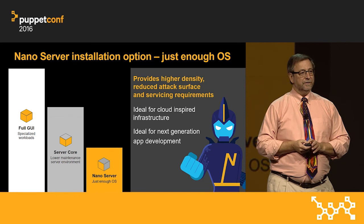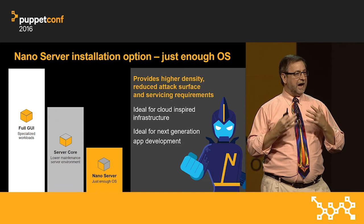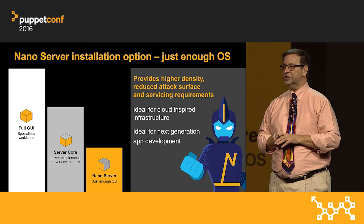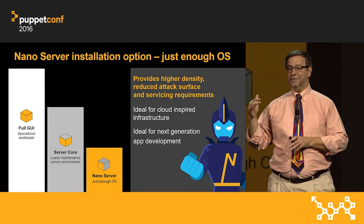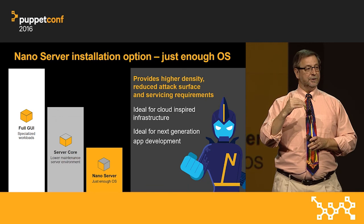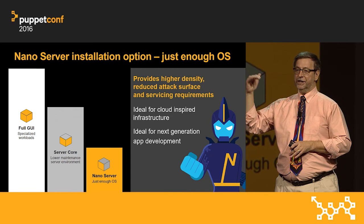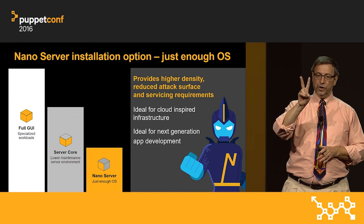Windows Server 2016 now has a new installation option. We have a full GUI, optimized for small business scenarios and remote desktop. We have Server Core, for running traditional server headless applications in your data center. And we now have Nano Server — a new headless deployment option optimized for two scenarios: cloud fabric (running on the host providing virtualization and storage) and next generation application host. In the future, all of Windows Server will be refactored as optional components on top of Nano Server.